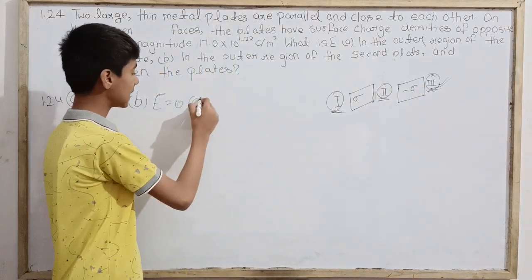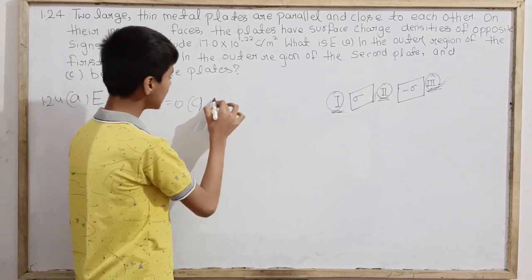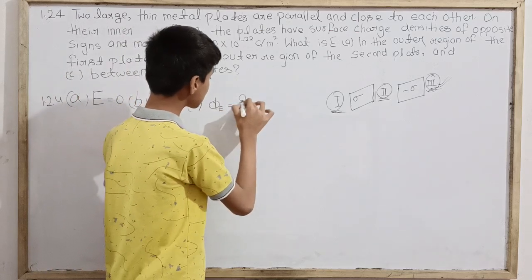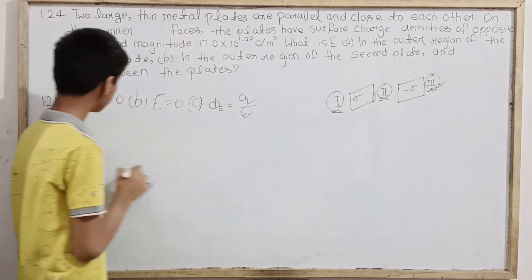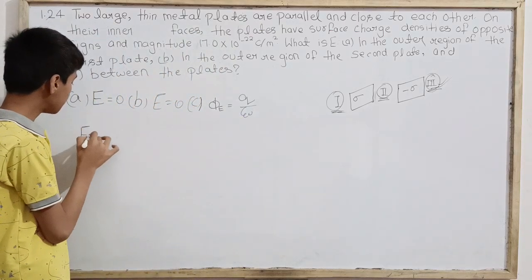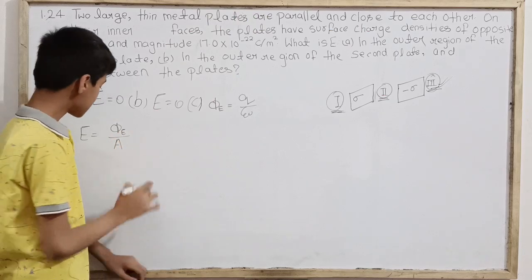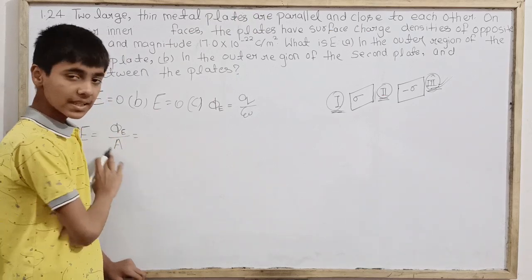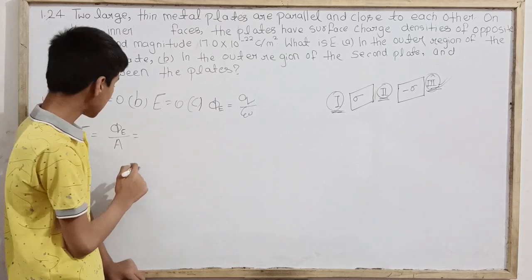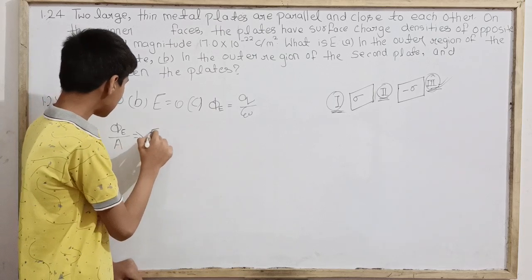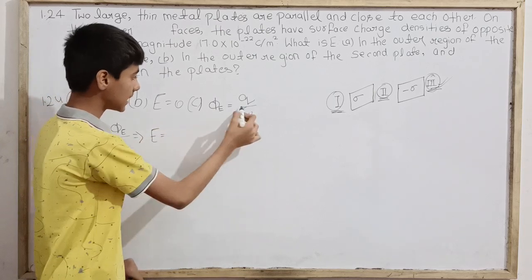For C, between the plates, the electric field we calculate using flux. Flux equals Q over epsilon naught. Electric field we write as flux over area. They are in the same direction, so we can simply use electric flux equals field times area. This implies that the field, the electric field, becomes flux over area.